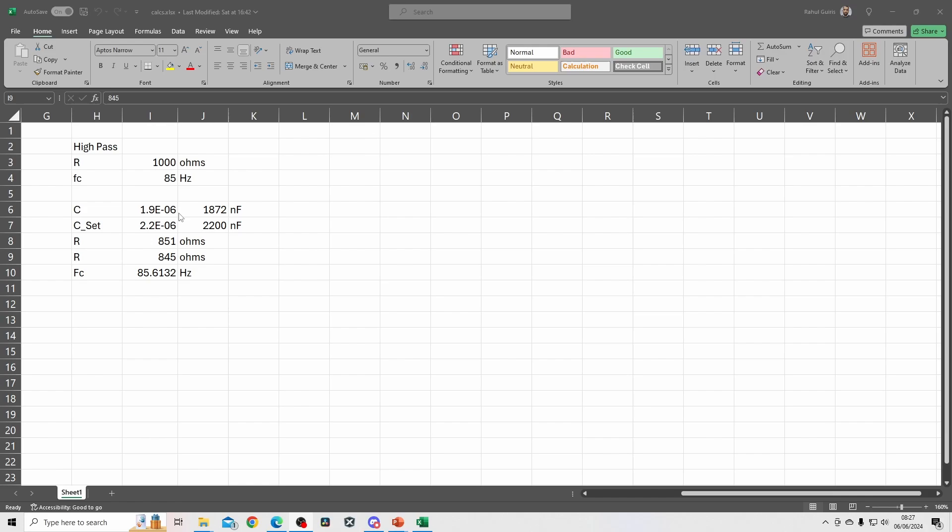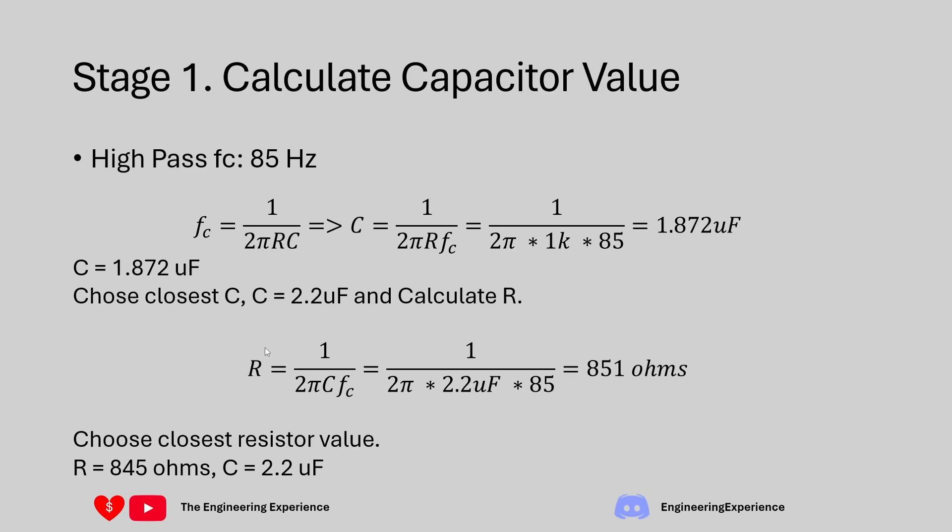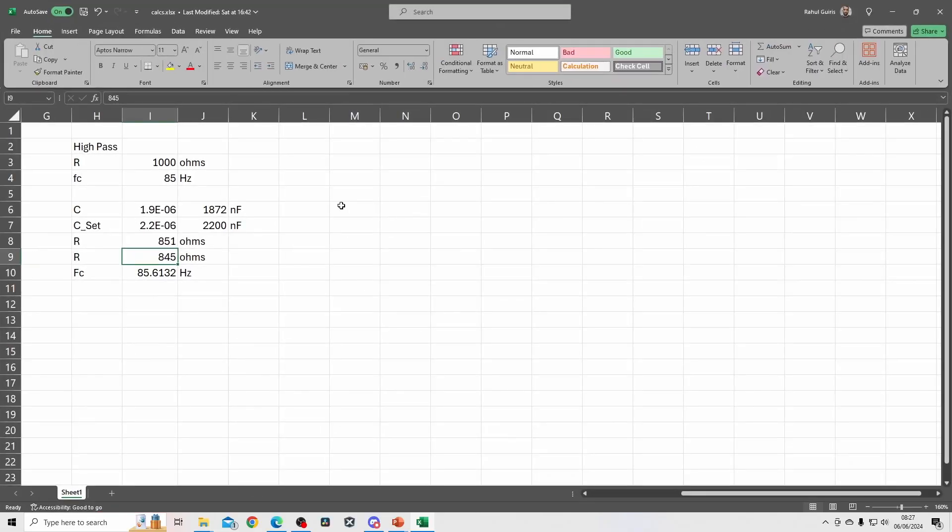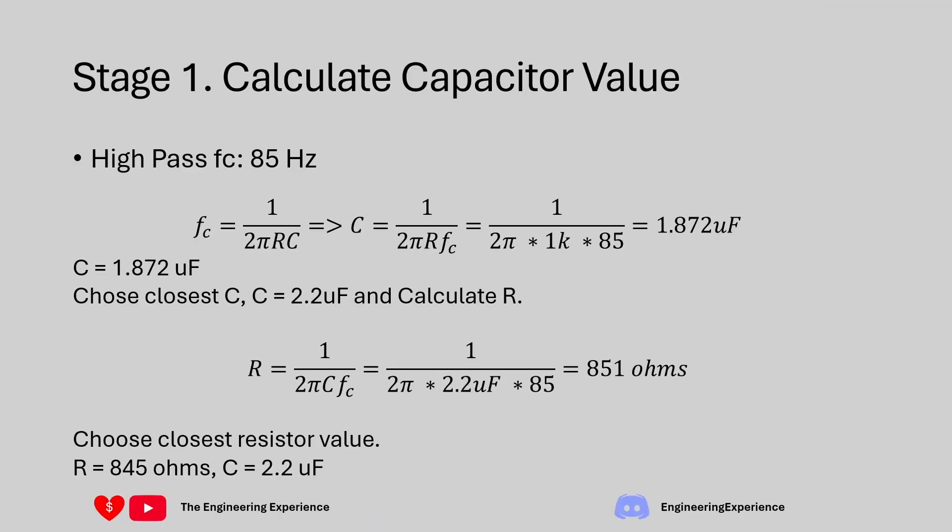At this stage we can recalculate the cutoff frequency. fc equals 1 over 2πRC, and if you put down 845 Ω and 2.2 µF we get a cutoff frequency of 85.6 Hz. You need to decide for the application if that is suitable, but that's fairly close to what we wanted. I will continue with these values for our first stage, the high pass filter.